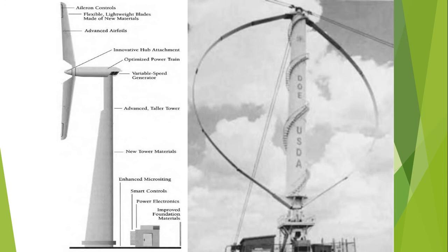A variable speed wind turbine allows the generator rotor speed to vary proportionally to the wind speed between the cut-in and rated speed, maintaining a constant and optimal aerodynamic performance above the rated speed. When the speed is higher than the rated speed, the generator rotor speed is held constant and the torque has to be actively controlled.